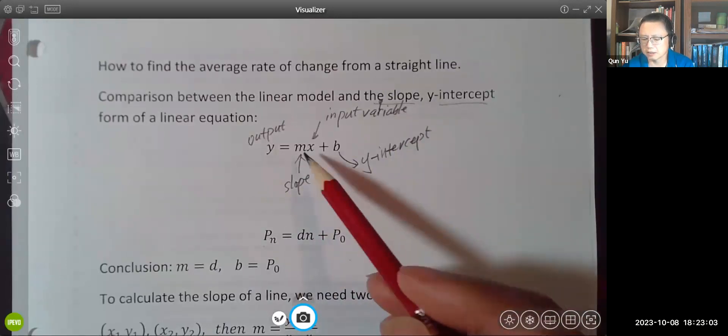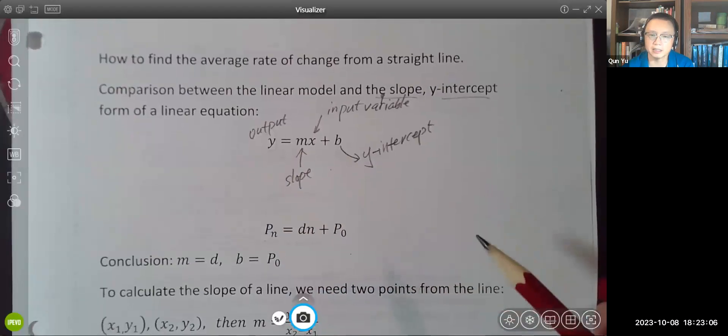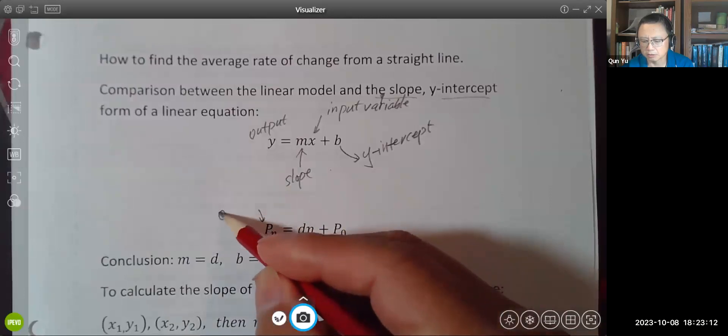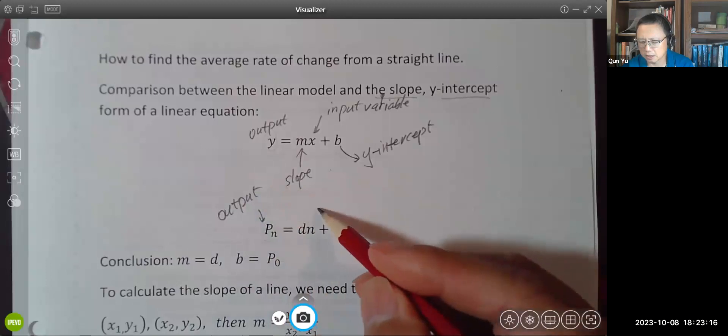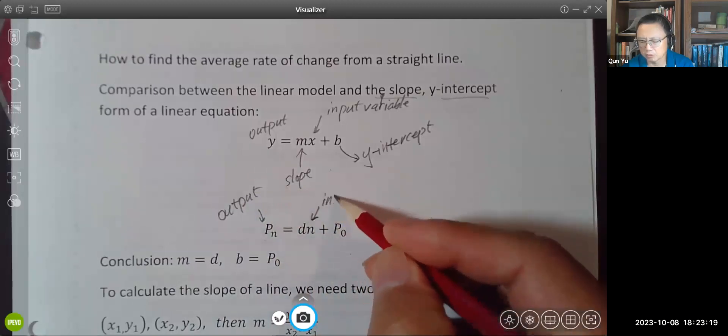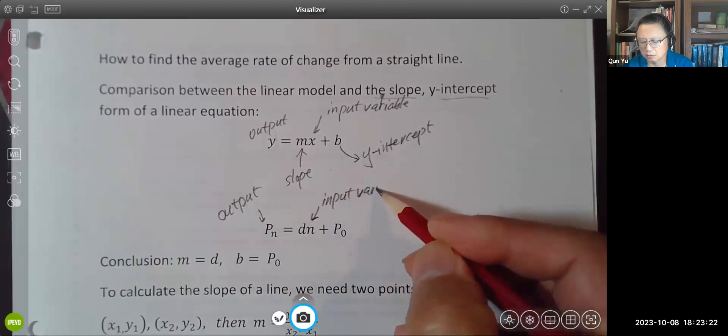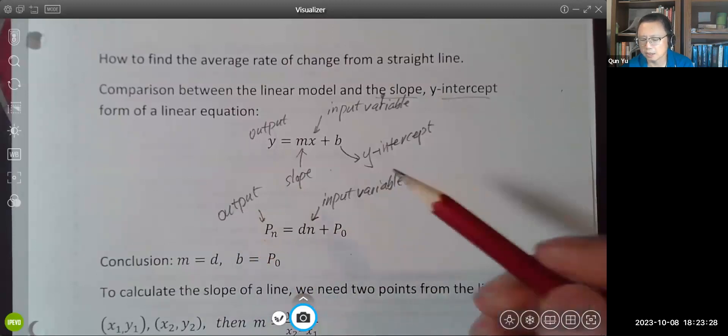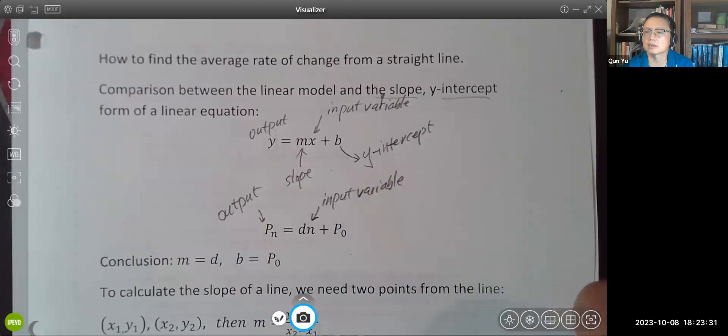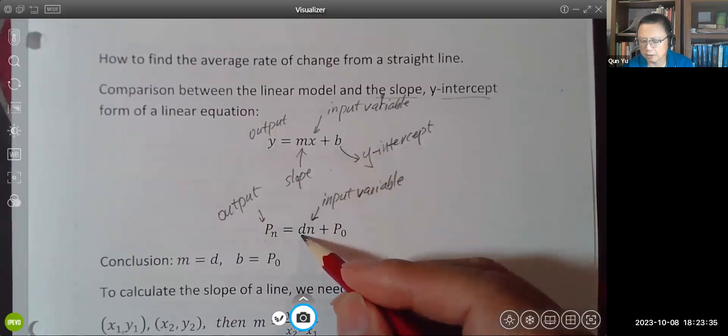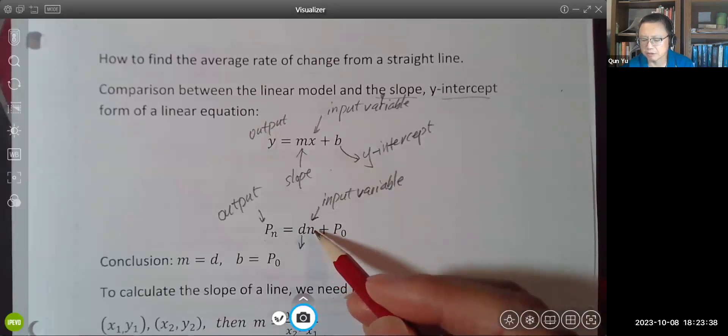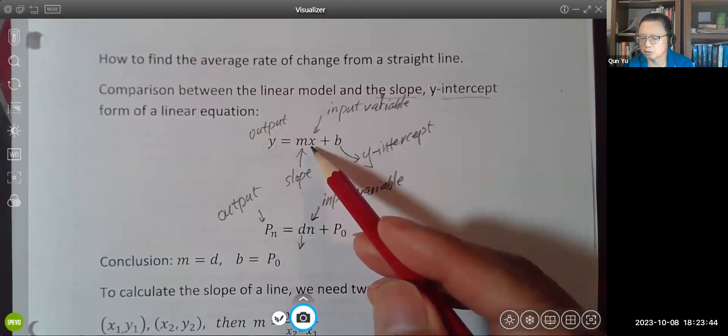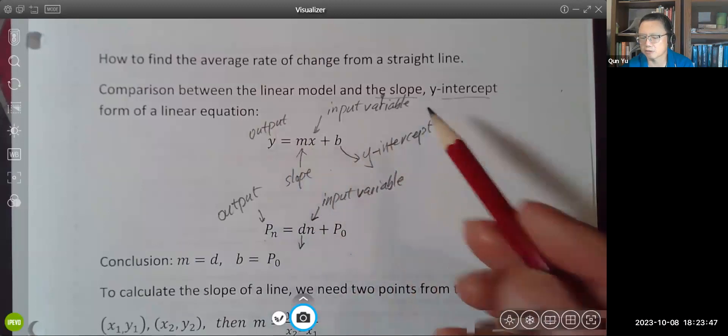Now if you look at this linear model, we have exactly the same structure. This is our future value, we can also call it the output variable. By the way, the output variable is also called dependent variable, and the input variable is also called independent variable. Apparently our growth rate is the number in front of your input variable, just like the slope is the number in front of the input variable in the slope y-intercept form of linear equation.